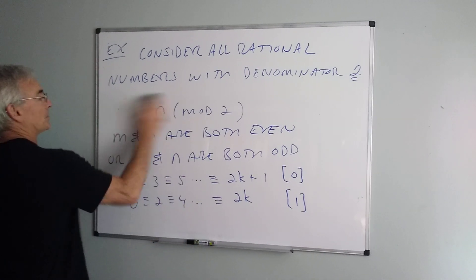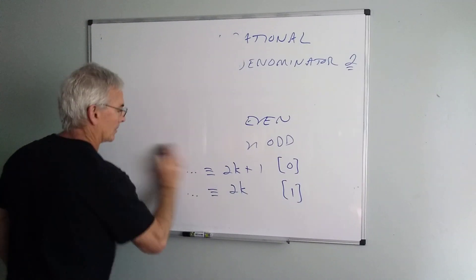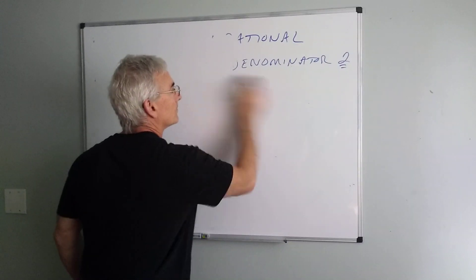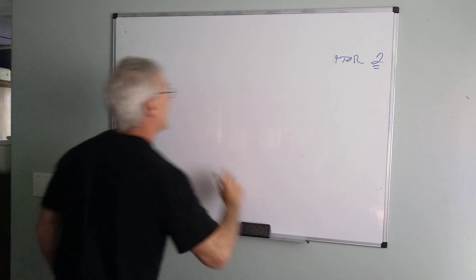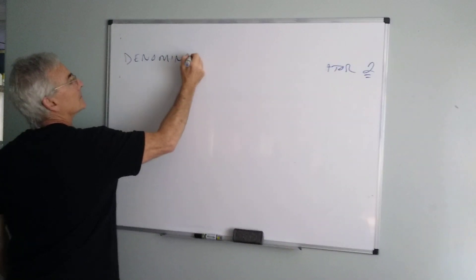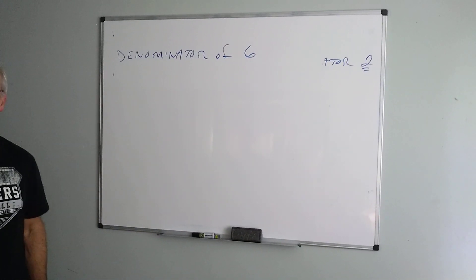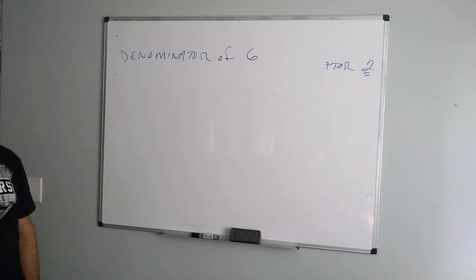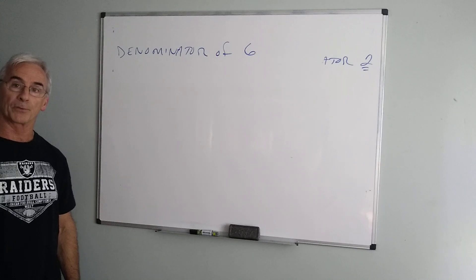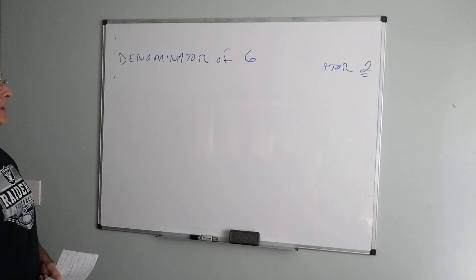Now we'll do another simple example. Let's consider all rational numbers with the denominator of 6. Now we have several more possibilities because of all the different types of remainder. So we could have remainder 0, 1, 2, 3, 4 or 5. This leads to exactly 6 equivalence classes.